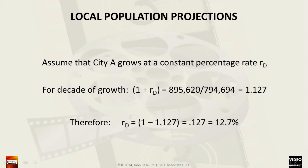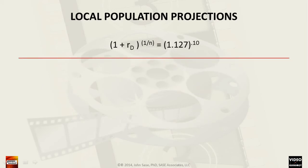This represents the population increase over a decade. However, we want to find the average annual growth rate over this period of time. Therefore, we begin by adding the decadal growth rate back to 1, which renders the sum of 1.127.